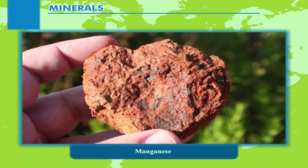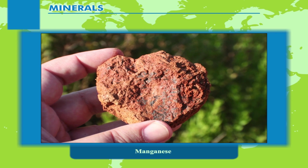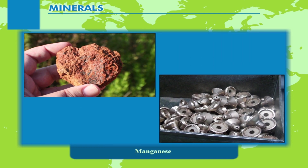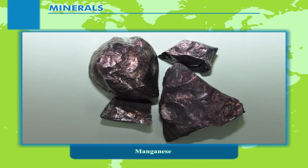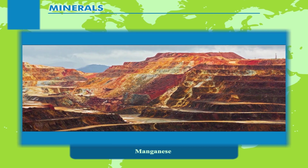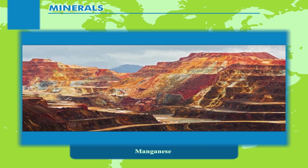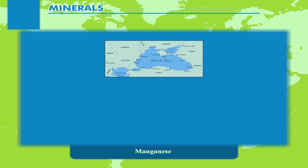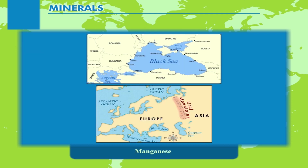Manganese is a mineral used in making alloys. The steel and textile industries are the two largest users of this metal. Russia is the main producer, followed by South Africa and Australia. In Russia, it is mined around the regions of the Black Sea and Ural Mountains.